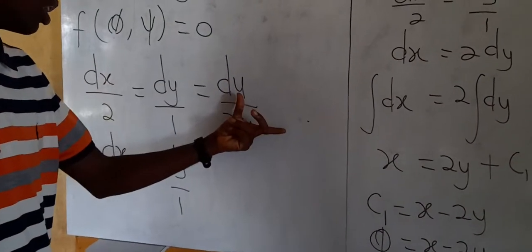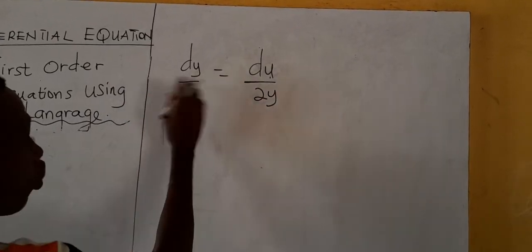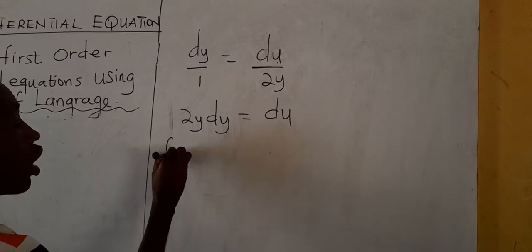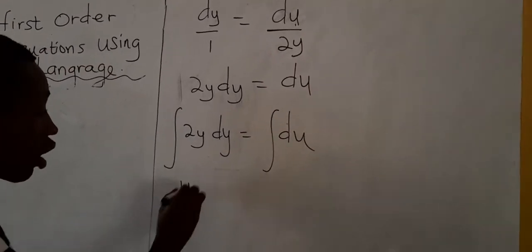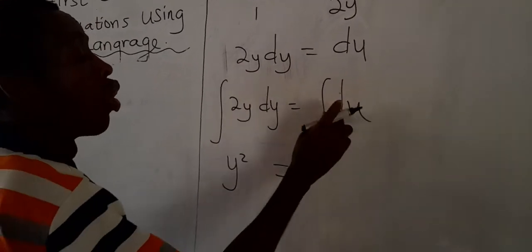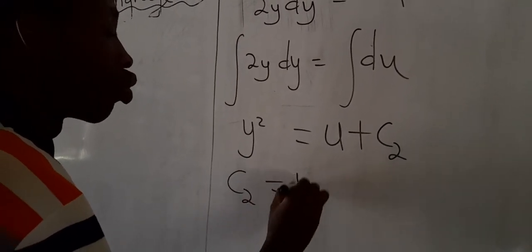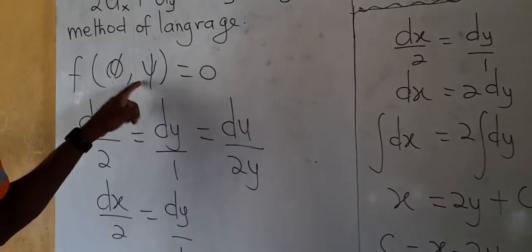Next, we equate dy/1 to du/2Y and integrate both sides to find c2. Cross-multiplying gives 2y dy = du. Integrating both sides: the integral of 2y dy equals the integral of du, which gives y² = u + c2. Making c2 the subject: c2 = y² − u. Since c2 is our second constant φ, we have φ = y² − u.